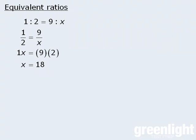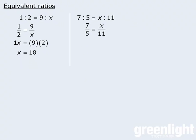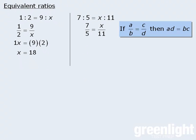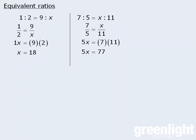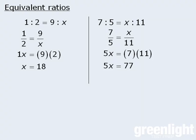Let's try another question. We rewrite the ratios using fraction notation and apply the cross-multiplication rule to get an equation. When we simplify the right-hand side and divide both sides by five, we get x equals 77 over five, which we can also rewrite as 15.4. So the ratio seven to five is equal to the ratio 15.4 to 11.